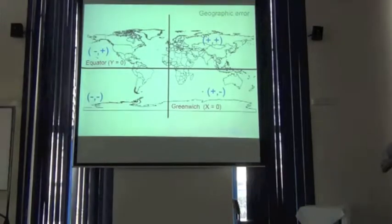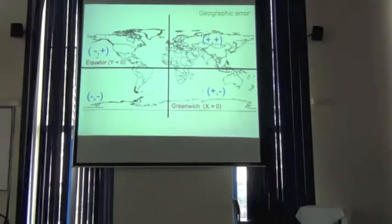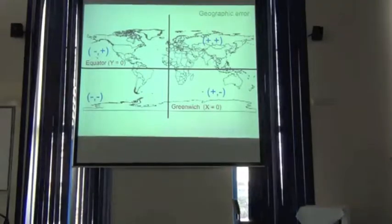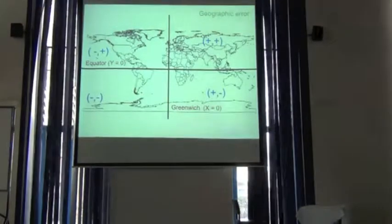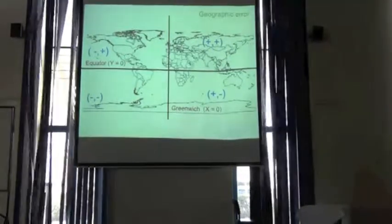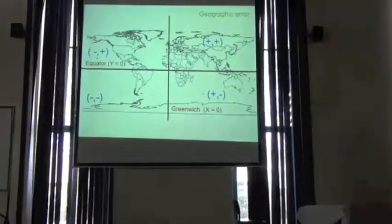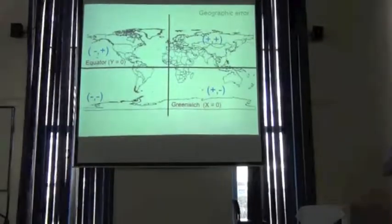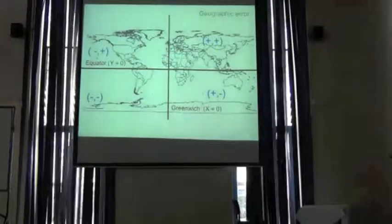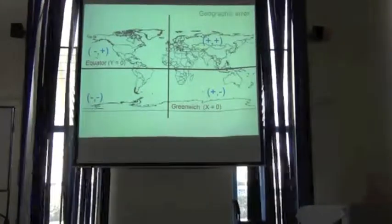If we divide the world into quarters, north of the equator coordinates are positive. In South America, similarly, if we divide the world into west and east using the Greenwich Meridian, coordinates to the left are negative and to the right are positive. The biggest problem is in Africa, where portions of the continent span three of the four quarters, making it very easy to get confused.